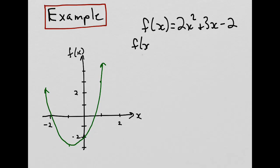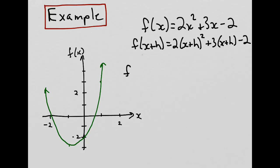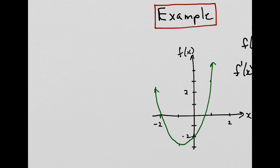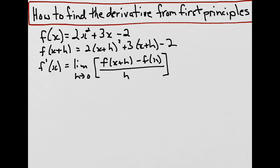The function is given by the equation f(x) equals 2x squared plus 3x minus 2. So f(x plus h) would be given by 2 times (x plus h) squared plus 3 times (x plus h) minus 2 — we simply substitute x plus h wherever we see an x. The derivative would be given by the limit as h approaches zero of f(x plus h) minus f(x) divided by h. Let's get a fresh workspace and work through this solution. We have f(x), f(x plus h), and the formula for calculating the derivative, so let's plug our values in.